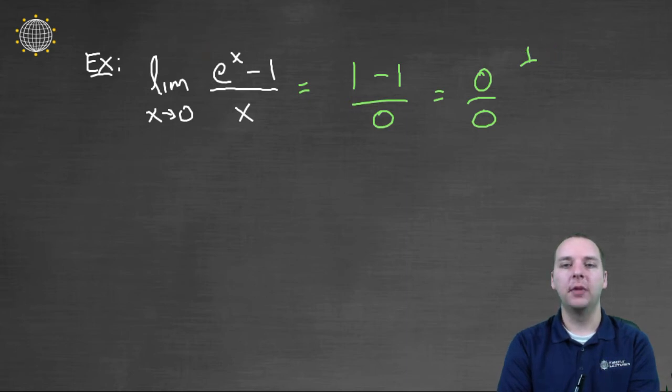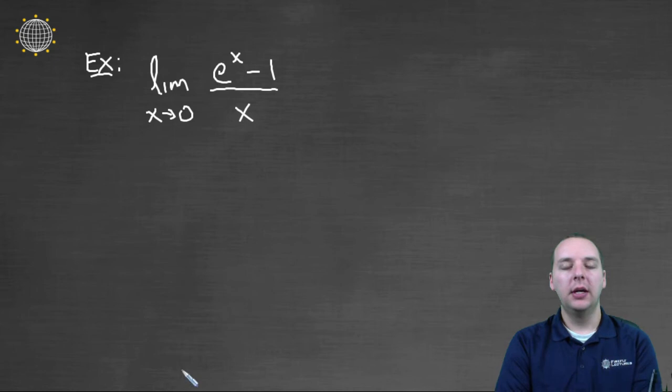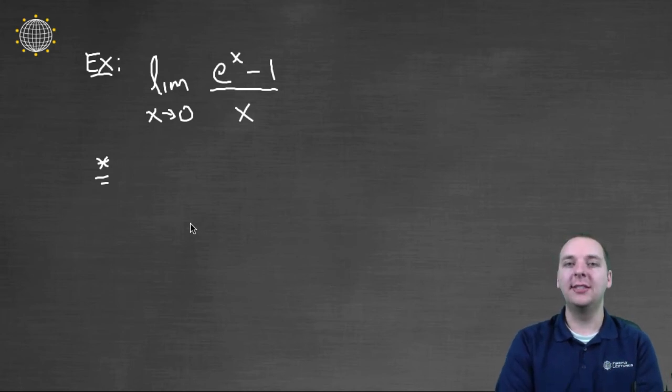When implementing L'Hopital's rule, many instructors tell you to notify the reader by writing 'LH' above the equal sign to designate you're using L'Hopital's rule. Some textbooks use a star above the equal sign. This isn't always necessary, but it helps whoever's reading your work understand why the limit of this thing equals the limit of something totally different—because you didn't use algebra, you used the special L'Hopital's rule.